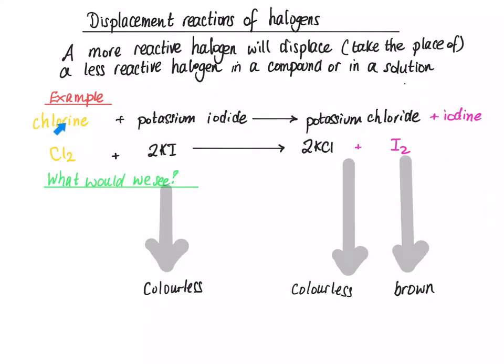So, what would we see in the reaction between chlorine and potassium iodide? Well, the chlorine is pale yellow in solution, potassium iodide is colourless, potassium chloride is colourless, and iodine is brown in solution. So, when you react pale yellow chlorine in water with potassium iodide, the pale yellow colour will fade, and a brown colour due to the iodine will form.